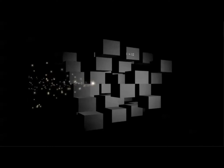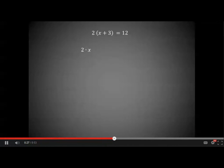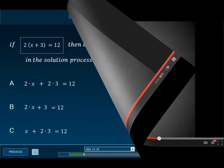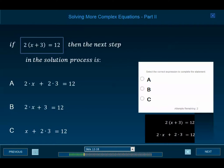Let's look at a specific example of clearing parentheses. Multiply 2 times the x, using the distributive rule, plus — remember — the 2 also multiplies times the 3. If 2 times the quantity x plus 3 equals 12, then the next step in the solution process is which of the following?